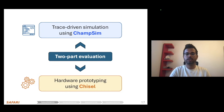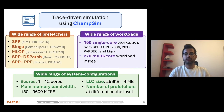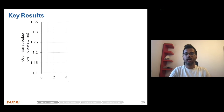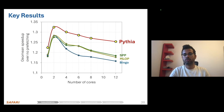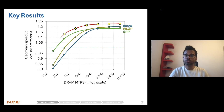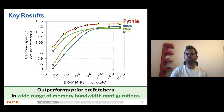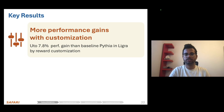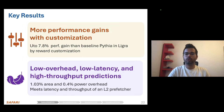We evaluate Pythia using both trace-driven simulation as well as hardware prototyping, and our evaluation spans a wide range of prefetch implementations, workloads, and system configurations. The simulation infrastructure is fully artifact-evaluated and can be freely downloaded from our GitHub repository. Our evaluation shows that Pythia not only improves performance across a wide range of core configurations on top of multiple prior prefetching mechanisms, but it also tangibly improves performance across a wide range of main memory bandwidth configurations, thanks to its adaptive nature. We also show Pythia can be fine-tuned in silicon using custom configuration registers for even higher performance, with low overhead, low latency, and high throughput predictions.